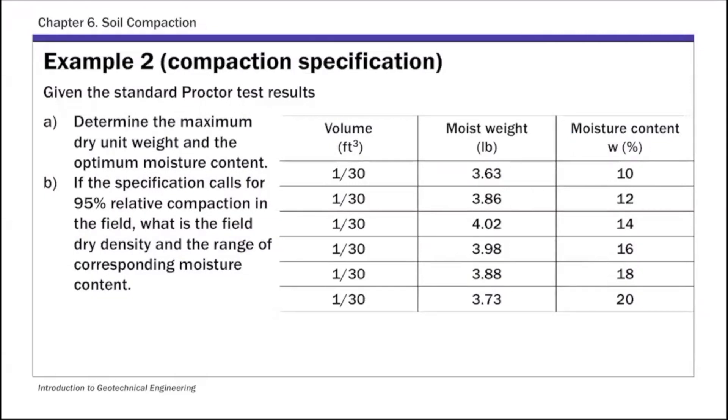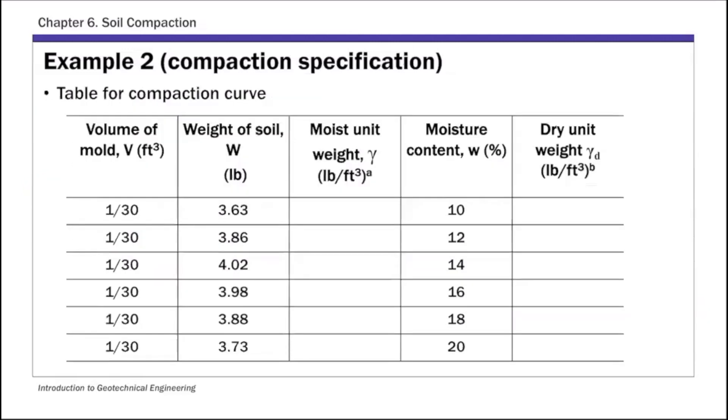So this example has two parts. The first one is basically similar to example one. We are given this standard proctor test. Let's get these two pieces of information, and then we'll look at specification. So for the first part, let me show you in this table. This is that same set of results from standard proctor test results.